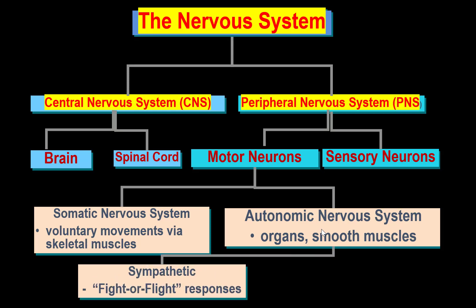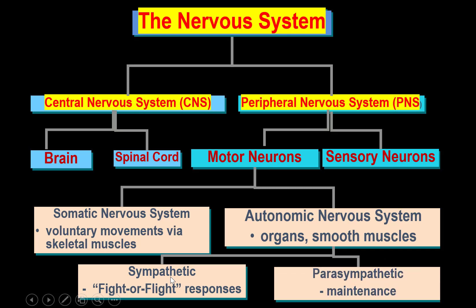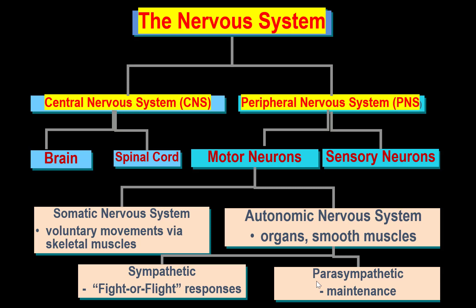The Autonomic Nervous System has a Sympathetic Division and a Parasympathetic Division. The Sympathetic Division is active during the fight-or-flight response, while the Parasympathetic Division is predominant during rest or maintenance.